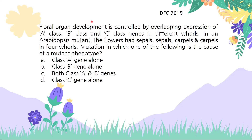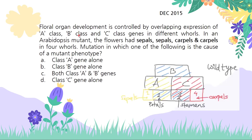Let's dive into the questions. The first question says organ development is controlled by overlapping expressions of A, B, and C class genes in different whorls. In an Arabidopsis mutant, the flower has sepals, sepals, carpels, and carpels in the four whorls. Mutation in which of the following genes will cause this mutant phenotype?